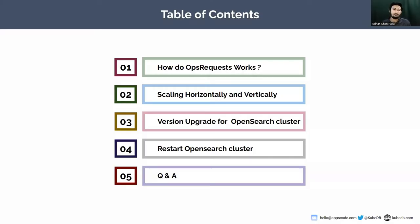Here comes our KubeDB OpsRequest. Let's start our webinar. This is the table of contents. First we're going to see what OpenSearch OpsRequest is and how it works with KubeDB managed databases. Later we'll see how to scale your OpenSearch cluster horizontally and vertically. After that, we'll see how to perform a version upgrade and restart your OpenSearch cluster, and finally we'll take some questions.